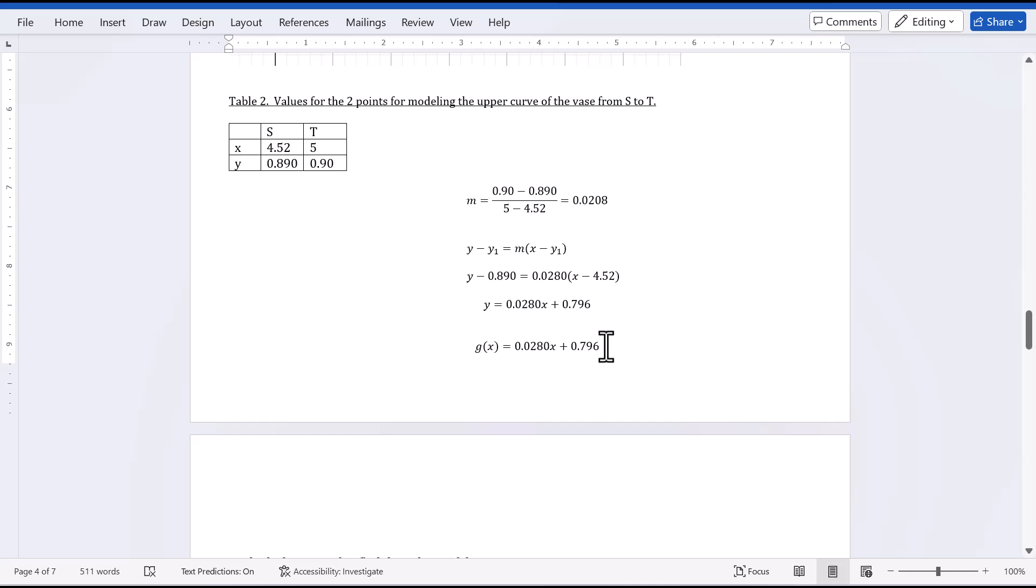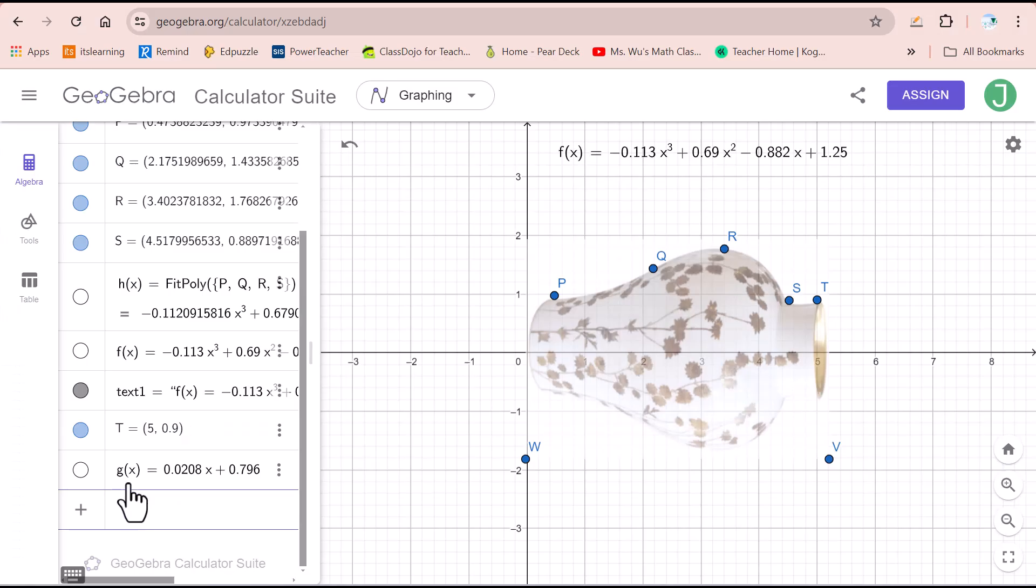Then go back to algebra to check how well it fits that part of the curve. Now I put the function into this algebra. Click here. We got the linear function from S to T. You could say it didn't fit the curve of the V very well.